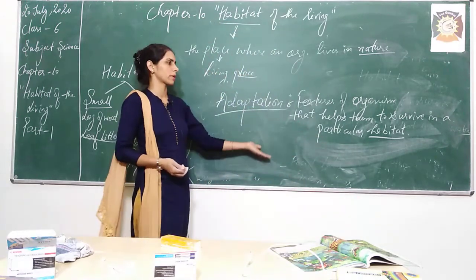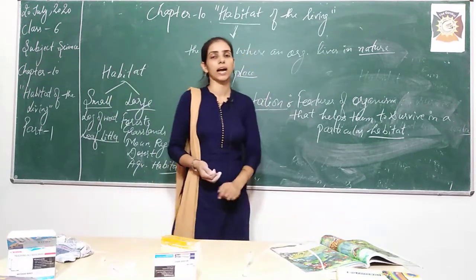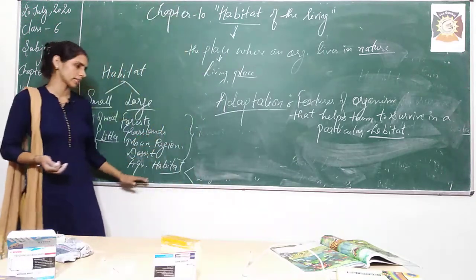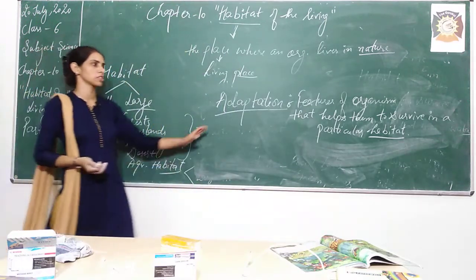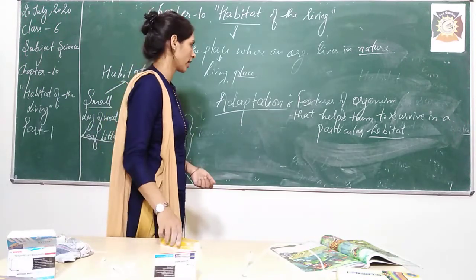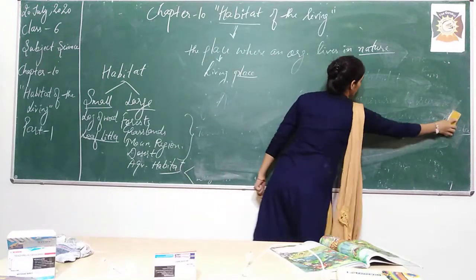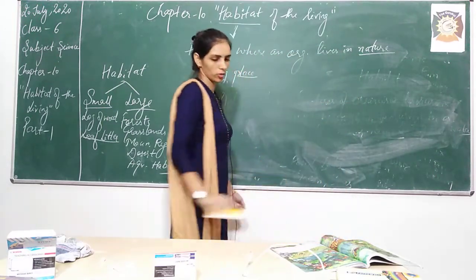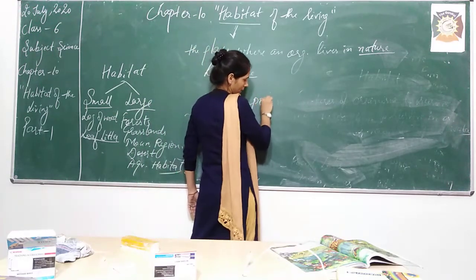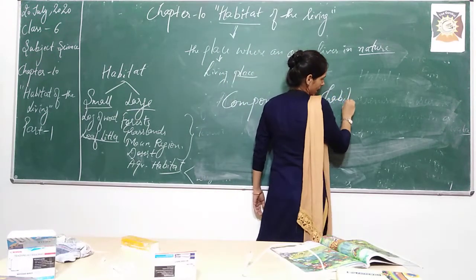So there are a number of adaptations for each and every habitat. We will discuss about the plants and animals living in these habitats and what kind of adaptations they follow. The last topic of today is components of habitat — we are going to discuss the components of habitat.